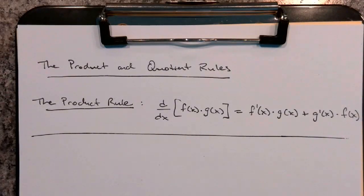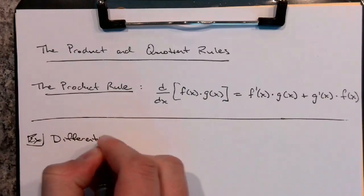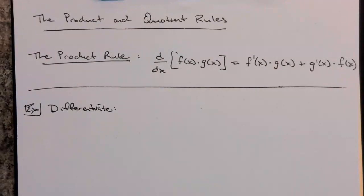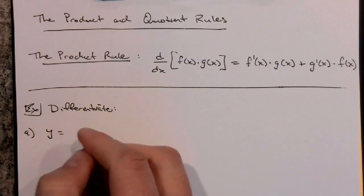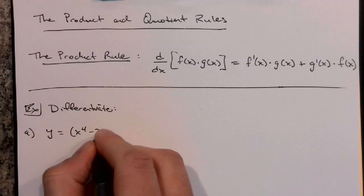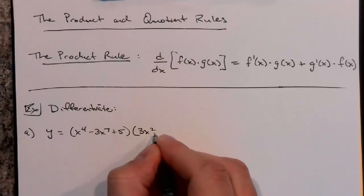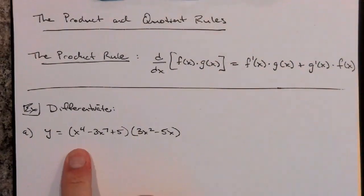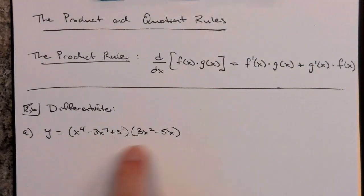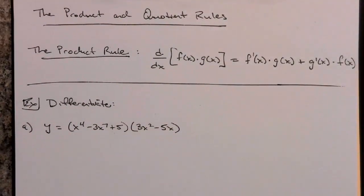I'm talking about them as first and second functions, which is usually easier for people to understand, because memorizing f and g can be confusing when the functions are also named f and g later on. Let's look at some examples. If I said differentiate, the first one we'll look at is y equals — we'll do a polynomial times a polynomial. So if I had x⁴ - 3x⁷ + 5 times 3x² - 5x. You can use the product rule, though some people distribute through first, and that's fine.